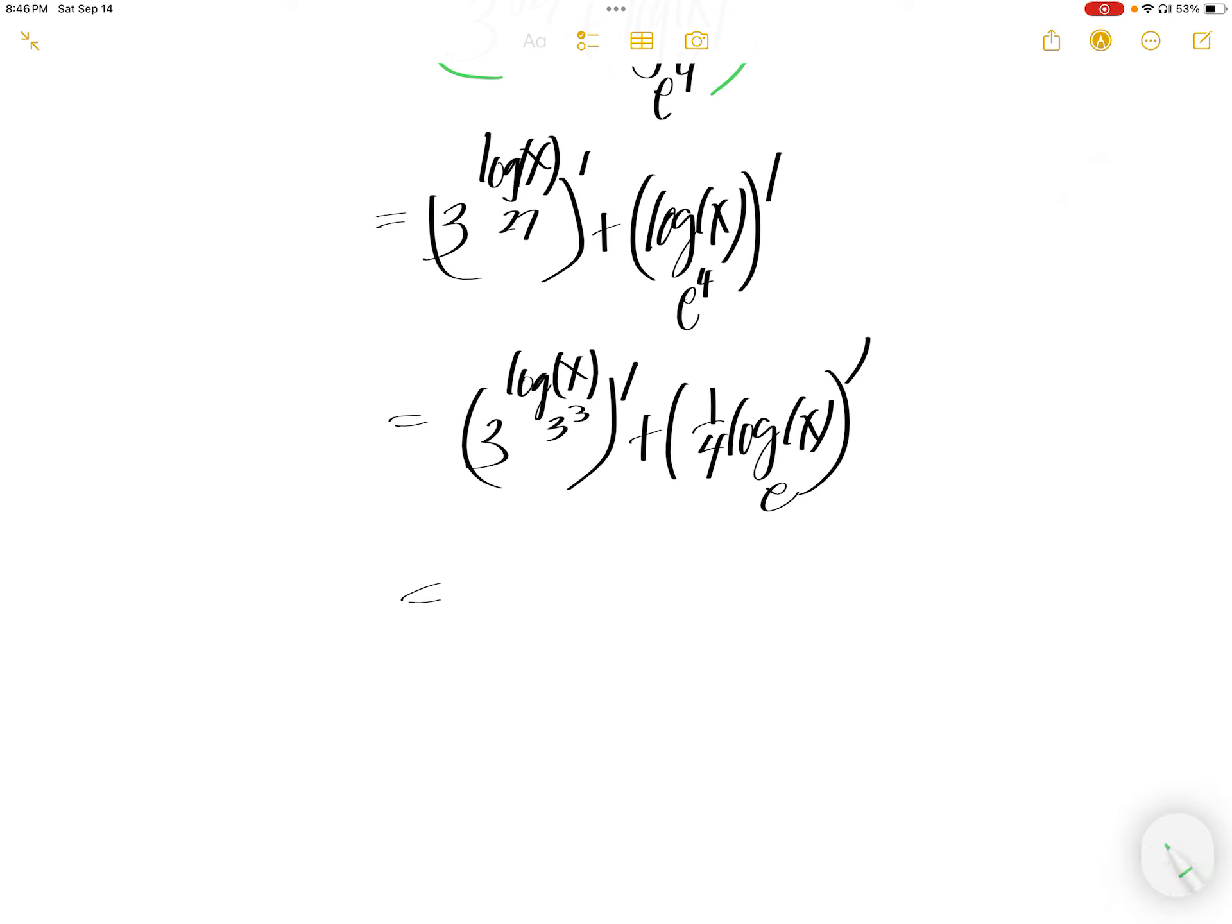Same thing here, 3 can come out. It comes out as one third, log x to the base 3. So log x to the base 3, this one is 1 quarter, log x to the base e.